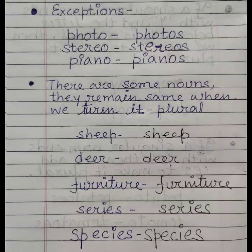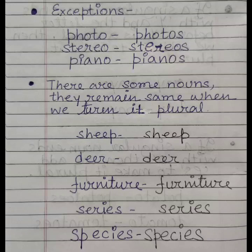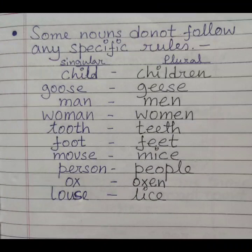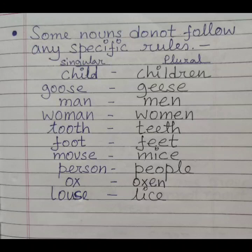Next, there are some nouns that remain the same when we turn them plural: sheep → sheep, deer → deer, furniture → furniture, series → series, species → species. Some nouns do not follow any specific rules. These are the rules that you need to understand and remember when you are solving your exercises. These rules are very important.